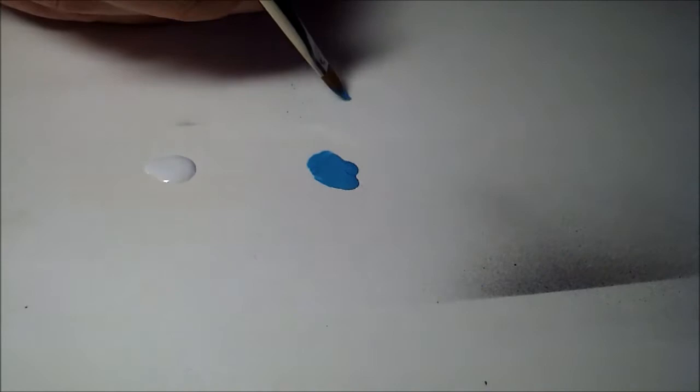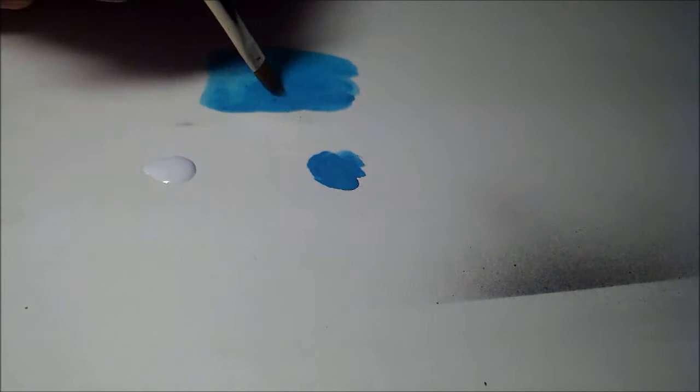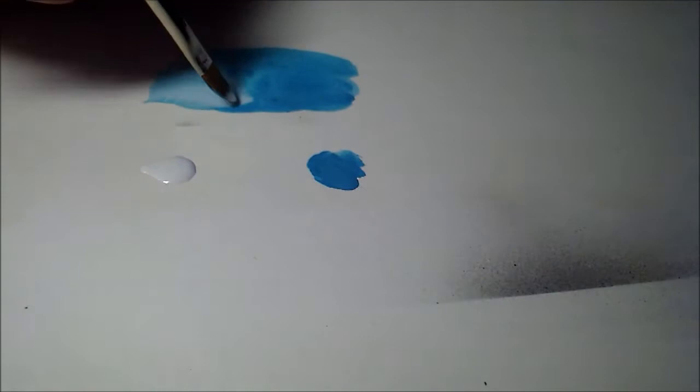This is a number six Filbert brush that we're going to be using. I just want to demonstrate the blending that you can achieve with this brush. This is just watercolor paper I'm using. So I'm just gonna start off with a simple block like this and I'm gradually adding some white in.